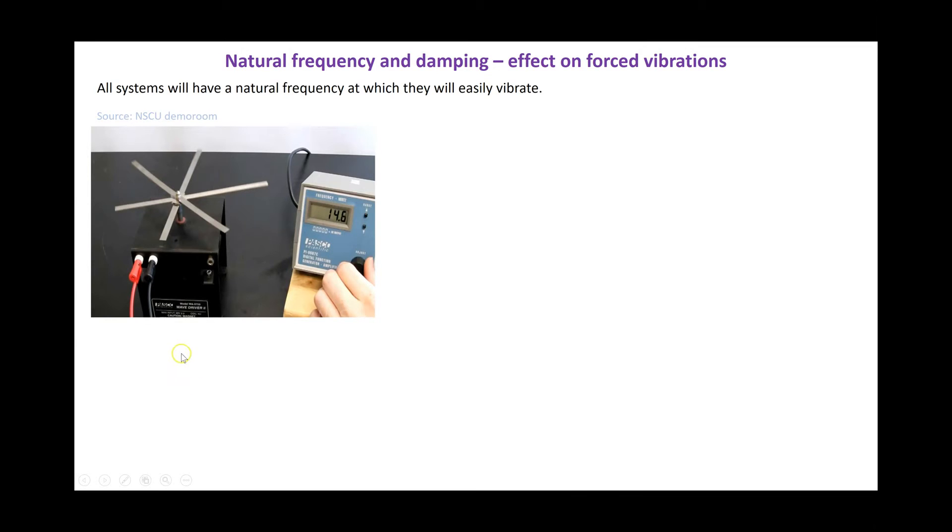In this video here, I have got a signal generator attached to a driver, which has got three bits of metal attached in the middle to effectively give us six different lengths of metal. And as we change the frequency, you will see that different lengths of metal will vibrate with different amplitudes. And when we hit the natural frequency of one particular length of metal, that length of metal will vibrate at maximum amplitude. So in this video, we can see we're cycling through to get to the natural frequency, or the frequency at which objects will naturally want to vibrate.